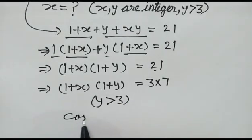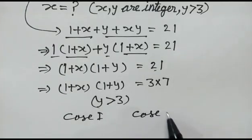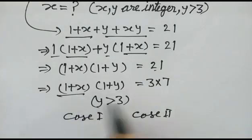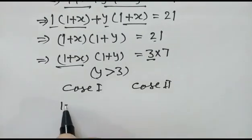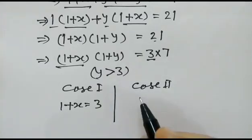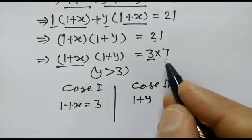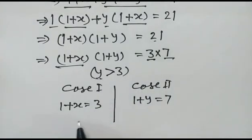So, case first and case second. 1 plus x will be equal to 3, and 1 plus y will be equal to 7, because y is greater than 3.